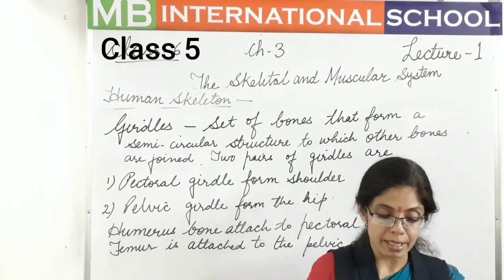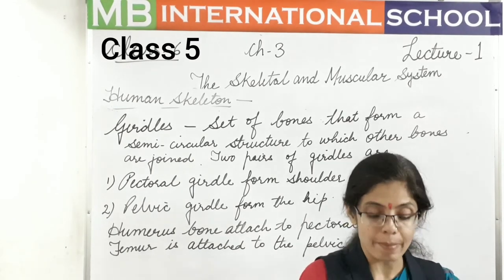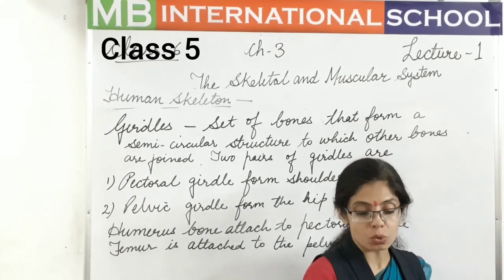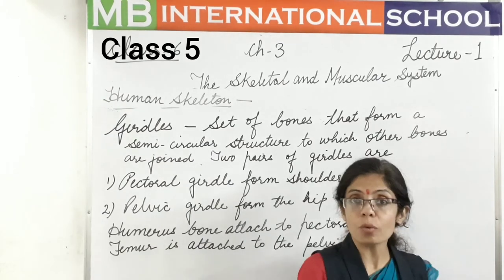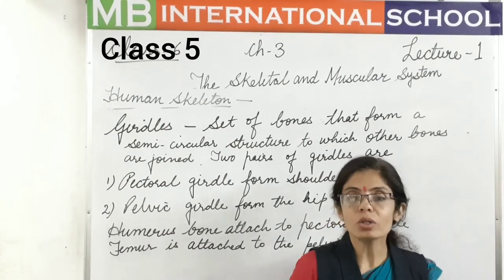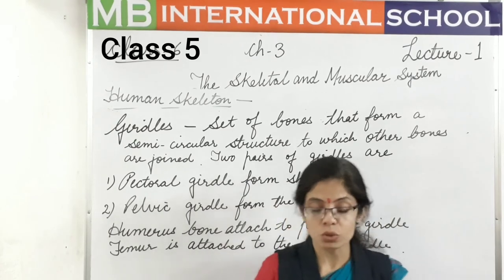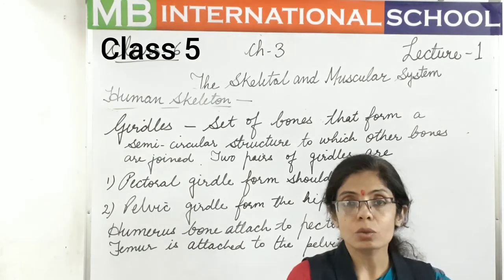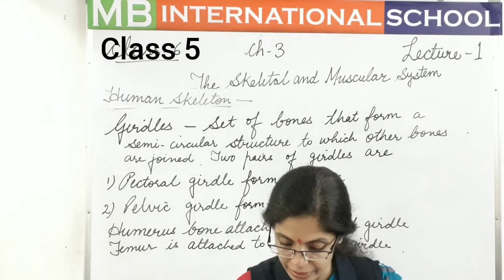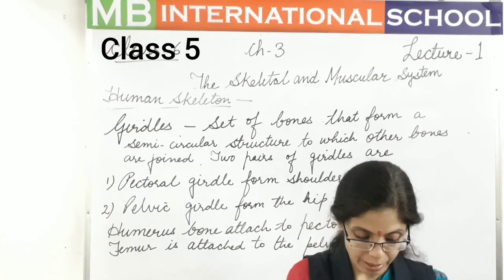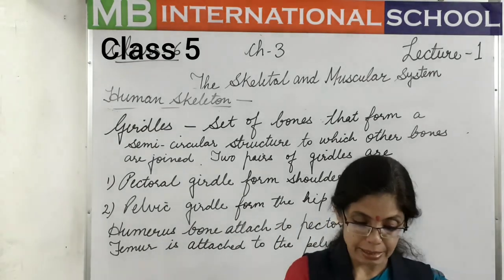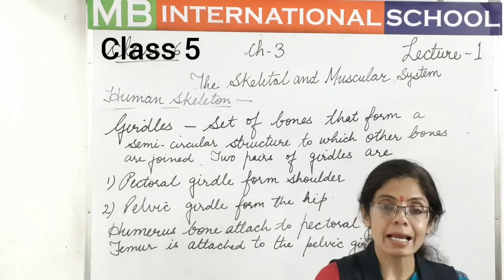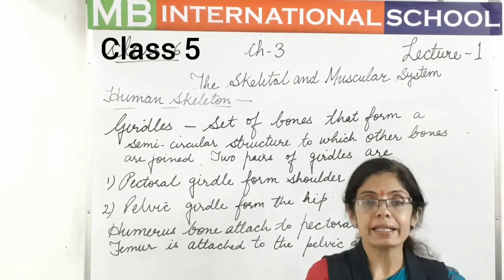The last topic is ligaments. Bones are held together by strong tissues called ligaments. The places where bones join are called joints. For your work, please go through the reading from page number 33 to page number 36, including the diagram part. This finishes the lecture for today and we will meet in the next lecture.